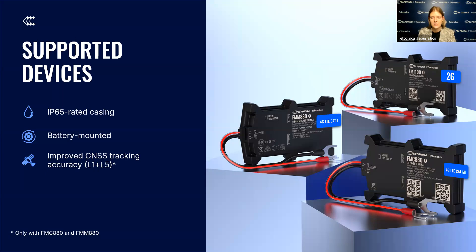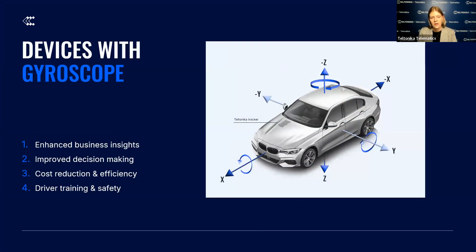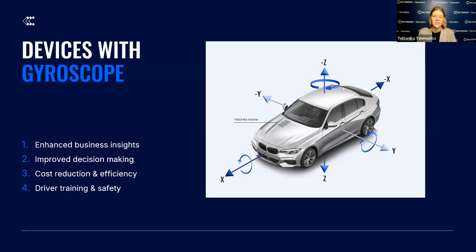These devices are ideal for insurance telematics, rental, and leasing industries thanks to their easy battery-mounted installation requiring no specific knowledge. With an IP65 rating they can withstand challenging environments, making them suitable for construction and agriculture. They can also be easily adapted for delivery services and transferred between vehicles. The FMX 880 series trackers feature enhanced GNSS accuracy ensuring highly precise tracking data. Let's take a moment to highlight why GPS tracking devices with gyroscope can be a valuable solution — enhanced business insights: gyroscopes provide precise data on vehicle movement, allowing informed data-driven decisions.